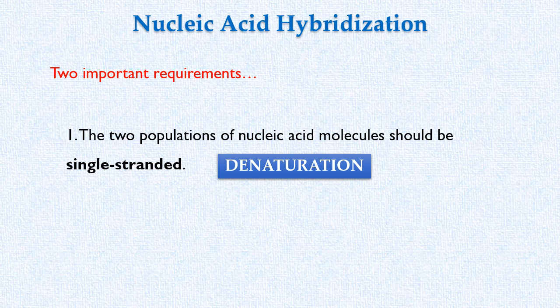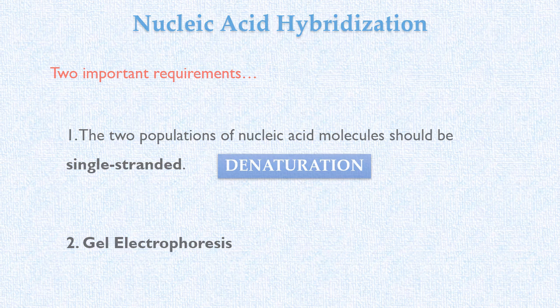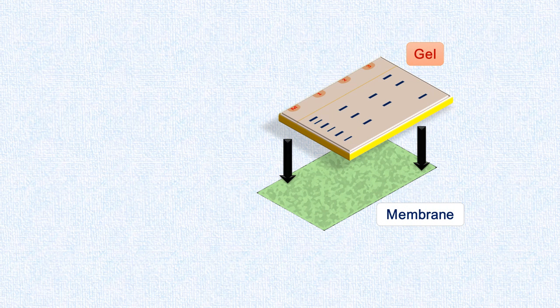Our second requirement is gel electrophoresis. In molecular techniques, a particular DNA or RNA sequence is detected on a gel, but again, the detection is not directly carried on the gel. The separated nucleic acid molecules on the gel are first transferred to a suitable solid support such as nylon membrane.